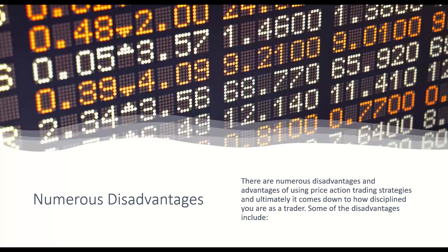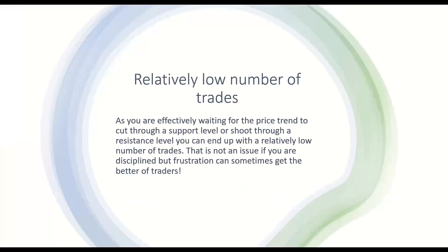There are numerous disadvantages and advantages to using price action trading strategies, and ultimately it comes down to how disciplined you are as a trader. You will find there are a relatively low number of trades because you're waiting for everything to set up perfectly. If I do 10 trades a month, it's a lot — I wait for the most perfect trade. Other traders want to make 10 trades in a day. Everybody's different. But when you're using this one set of parameters, you need to make sure that it's perfectly set up. As you are effectively waiting for the price trend to cut through the support level or to shoot through a resistance level, you can end up with a relatively low number of trades. I use every filter system I can to disqualify a trade.